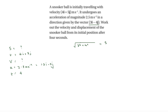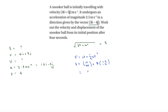With this information we work out s using s equals ut plus half at squared. So s equals 4 times the vector 4, 5, giving 16, 20, plus half times 16 — which is 8 — times the vector 1.5, minus 2, giving plus 12, minus 16. So the displacement equals 28i plus 4j.